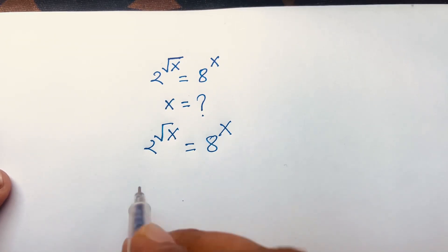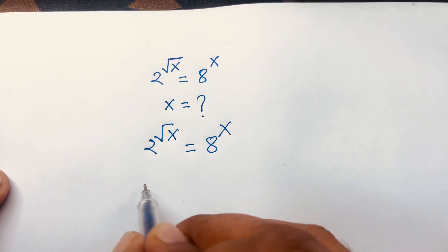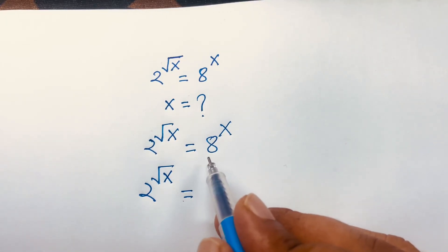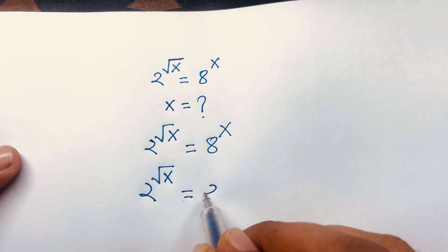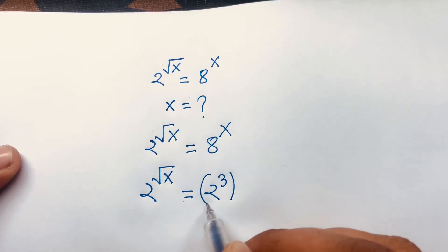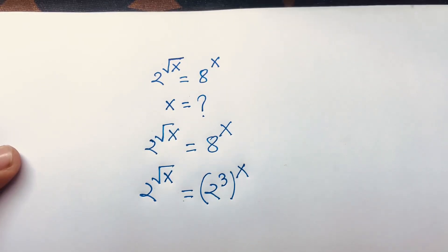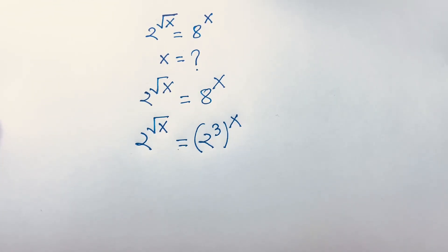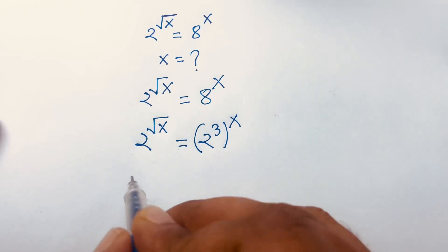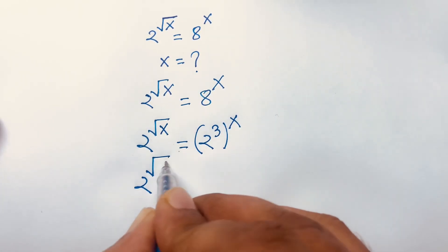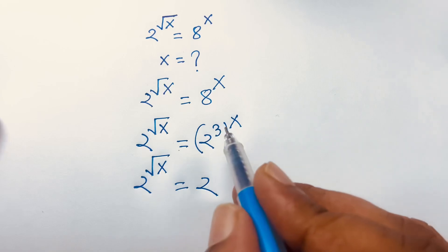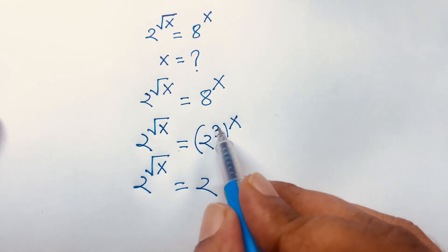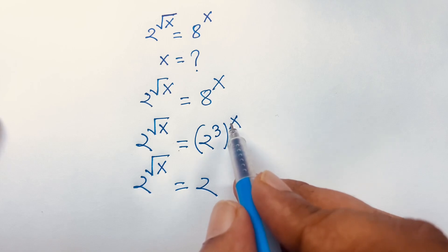This equation becomes 2 to the power square root x is equal to 8 to the power x. Now, 8 will be 2 to the power 3, and whole to the power x. Because 2 to the power 3 equals 8. So this equation becomes 2 to the power square root x is equal to 2 to the power 3x, according to exponential rules.